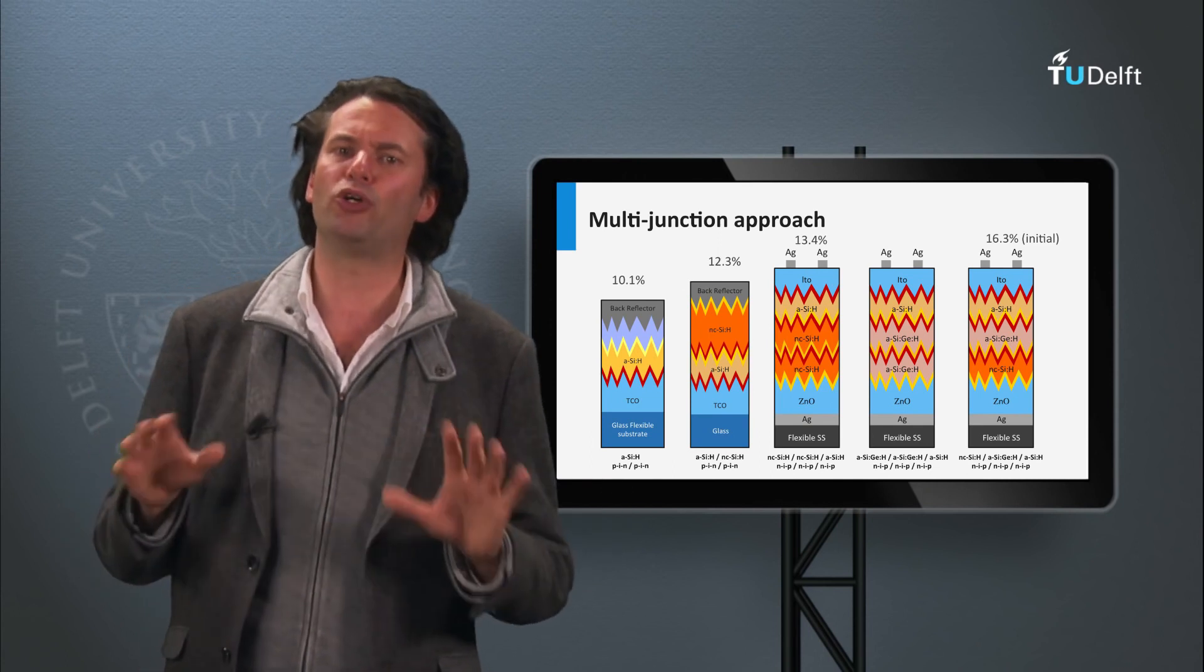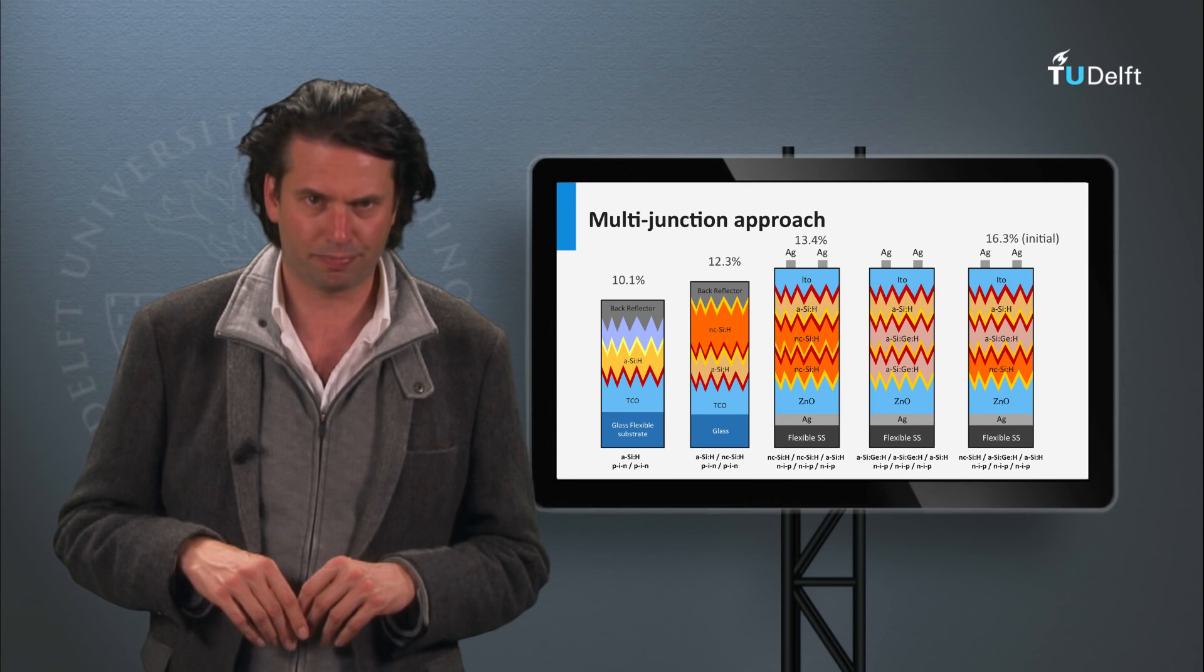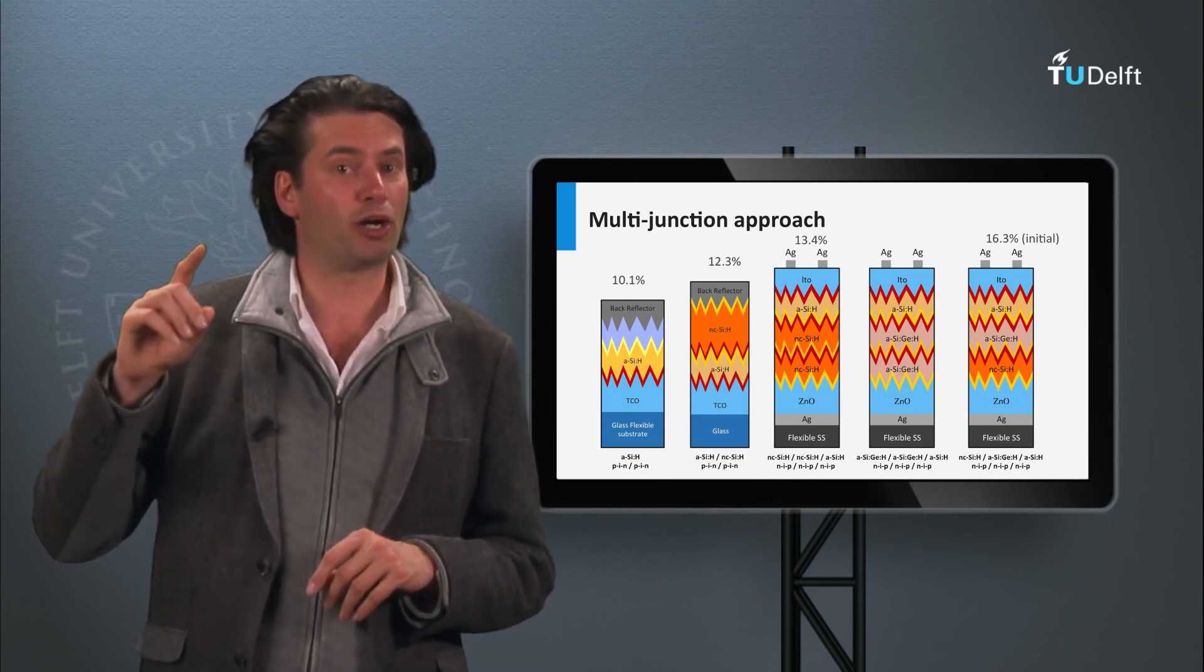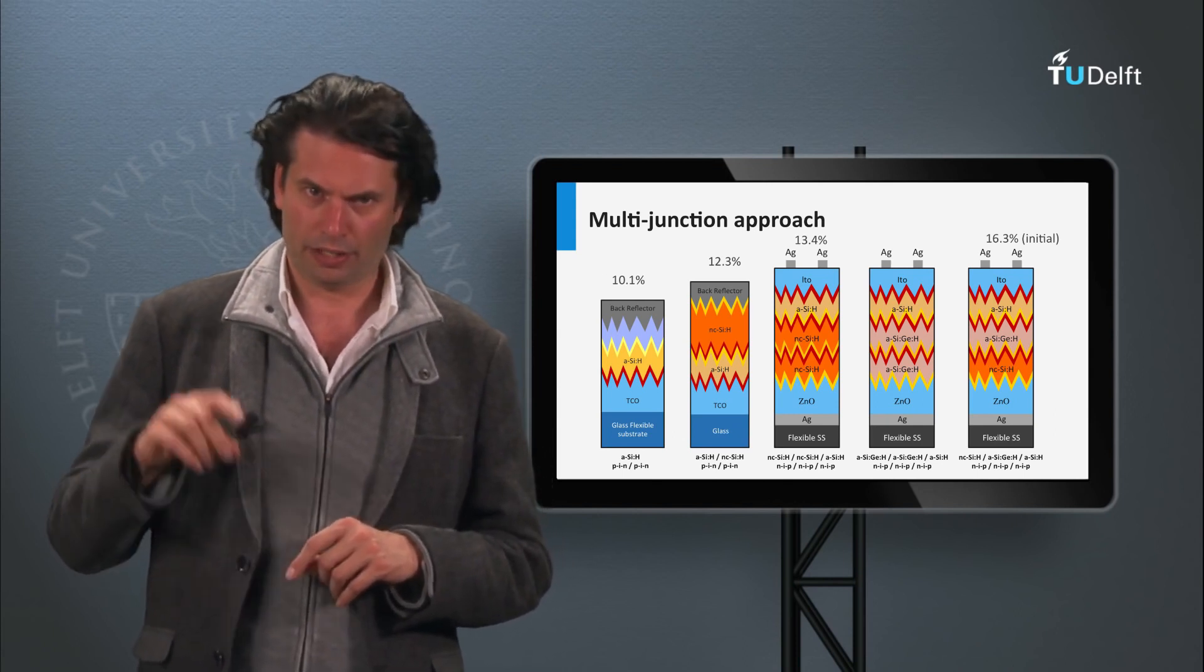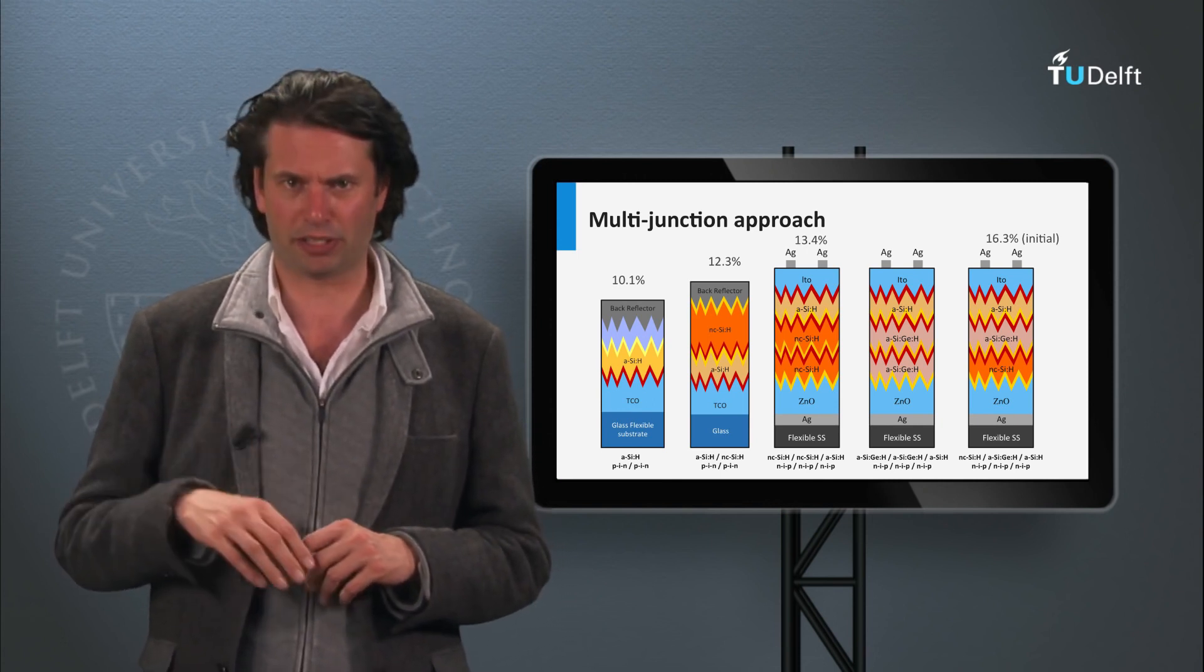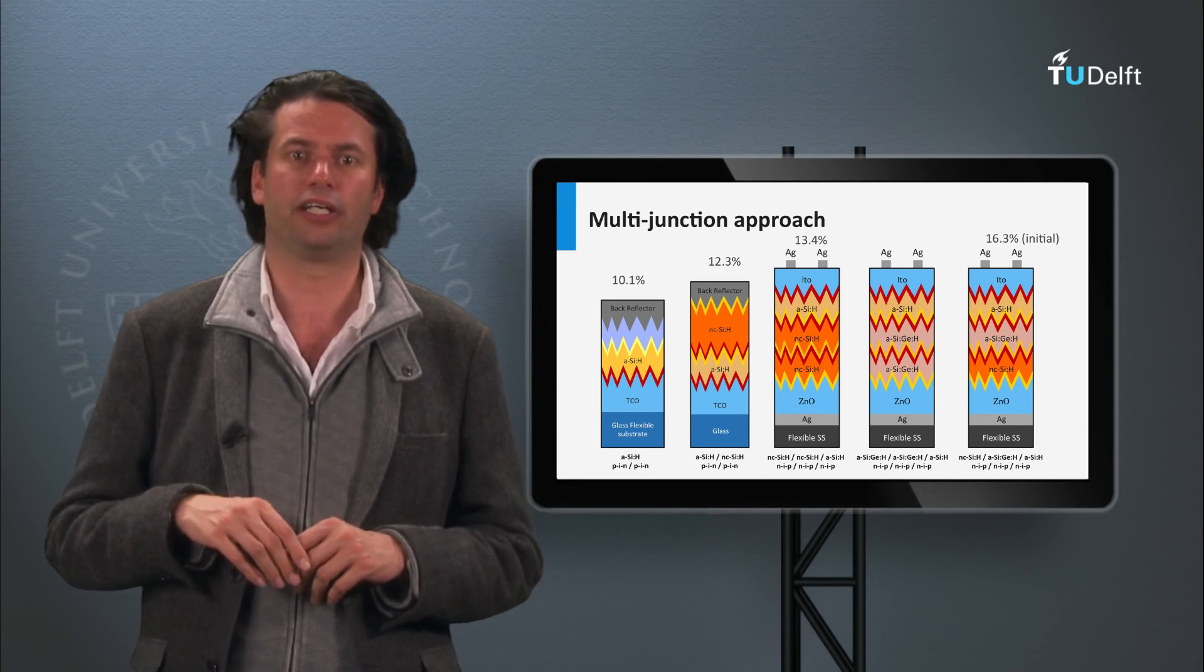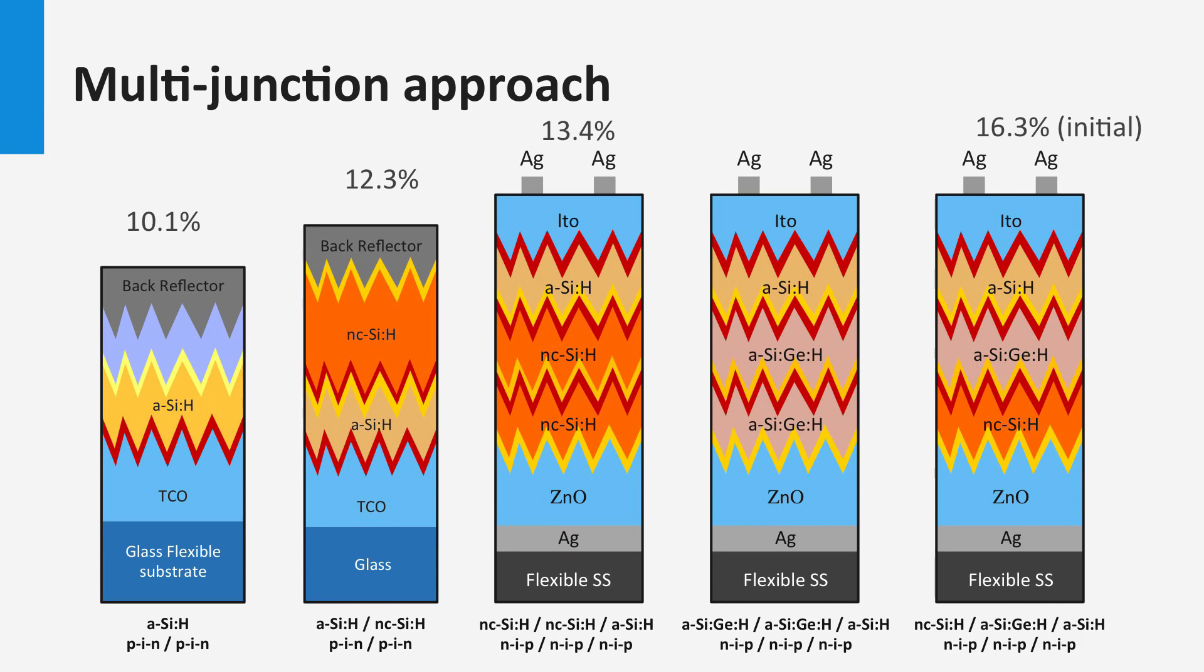In this slide you see the most studied and developed thin-film silicon concept on lab scale. The record single junction amorphous silicon solar cell developed by Oerlikon Solar has an efficiency of 10.1%. The best single junction nanocrystalline silicon solar cell is 10.7% as obtained by EPFL in Neuchatel, Switzerland. The best result for a micromorph double junction or an amorphous nanocrystalline double junction is 12.3% obtained by Oerlikon Solar. LG in Korea has the record for the amorphous nanocrystalline nanocrystalline triple junction with 13.4%. United Solar achieved an initial efficiency of 16.3% for the triple junction based on amorphous silicon, amorphous silicon-germanium, and nanocrystalline silicon.